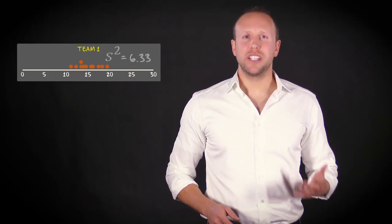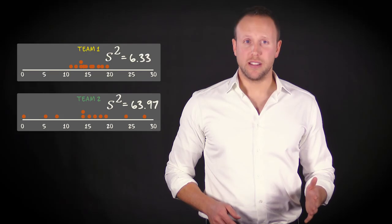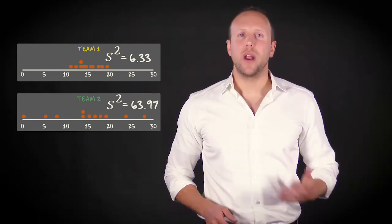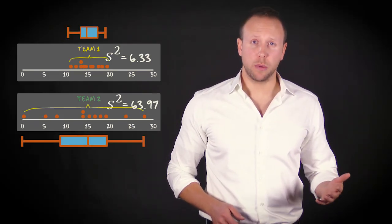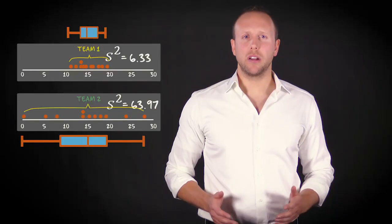The first team, displayed here, has a variance of about 6.33. You can see that the larger variability of the tattoo density in team 2, that was already visible from the dot plots and the box plots, is also represented by the larger variance.